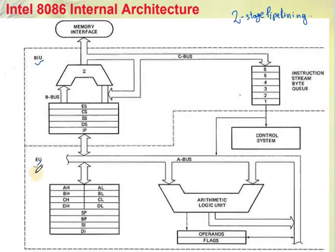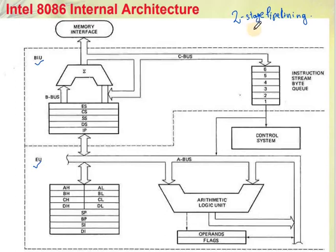This is the BIU and EU. We can say that the 8086 supports two-stage pipelining, since its architecture is divided into two units — the Bus Interface Unit and the Execution Unit.